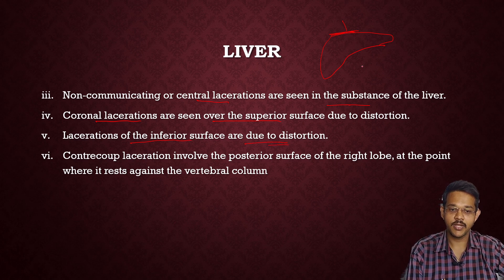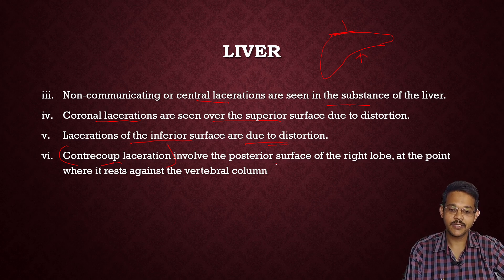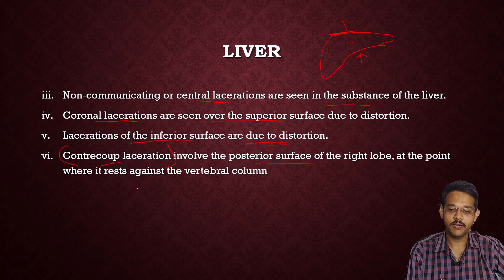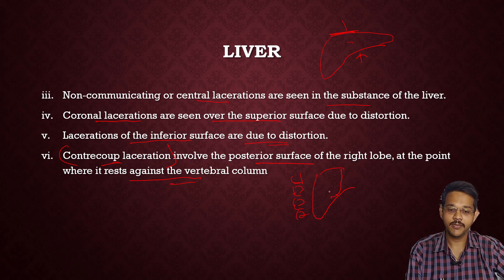Lacerations of the inferior surface are due to distortion — either the superior part, called coronal lacerations, or the inferior part of the liver may be lacerated. Countercoup lacerations, opposite to the point of impact, involve the posterior surface of the right lobe where it rests against the vertebral column. This occurs when the liver is pushed against the vertebral column due to impact from the front, causing laceration at the back — called countercoup lacerations.